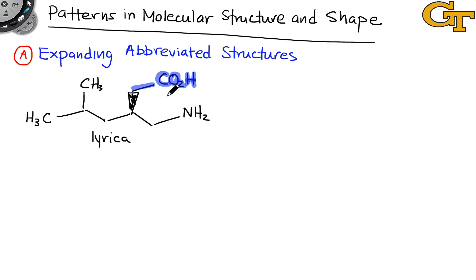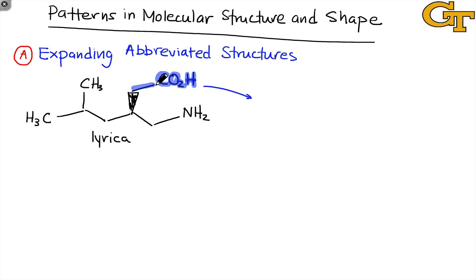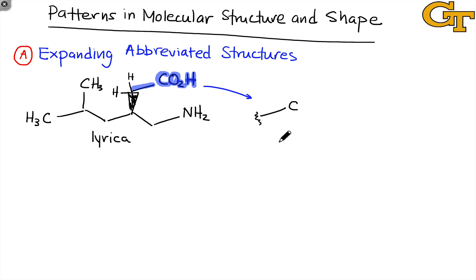Continuing with this example of Lyrica and this highlighted group, this is called a carboxylic acid, and we can take this group and really blow it up into its constituent atoms. We can tell immediately that the carbon is connected to an implied carbon atom with two hydrogens connected to it, because the C is adjacent to a line indicating a single bond. To begin expanding this structure, we can start by drawing that C connected via a single line to the rest of the structure, represented with a squiggly line.